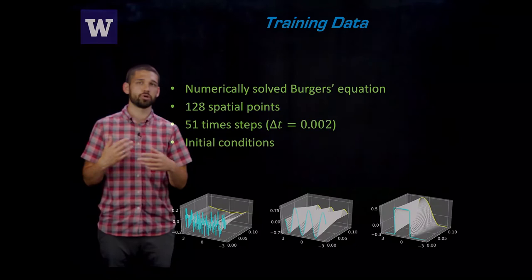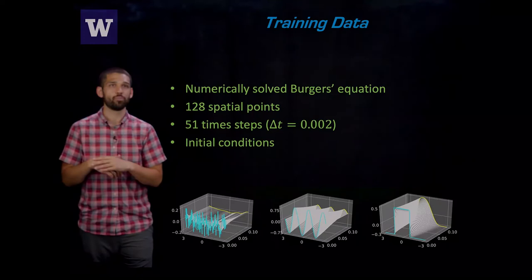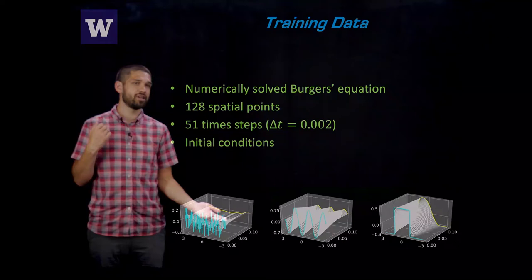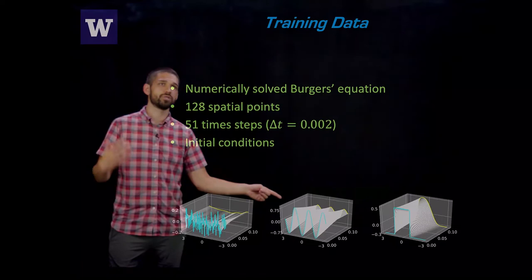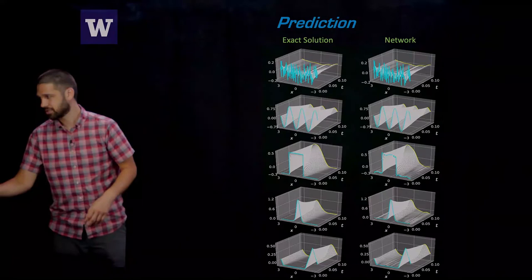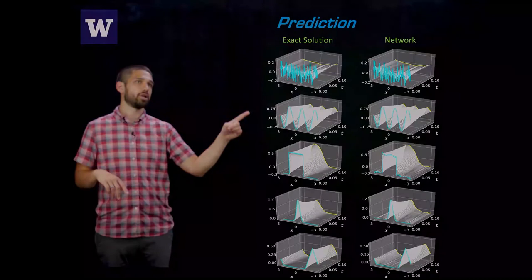Our training data for Burgers equation, we just numerically solved Burgers equation a bunch of times with some spatial discretization and time discretization. We chose three different types of initial conditions for our training data: randomly generated white noise, sine waves with different frequencies and amplitudes, and square waves with different heights and widths.